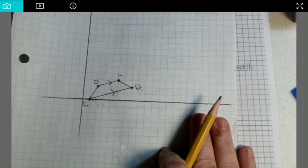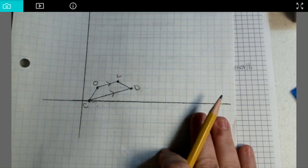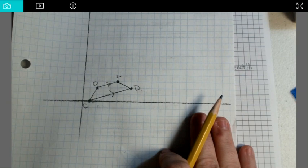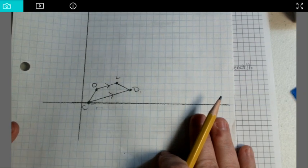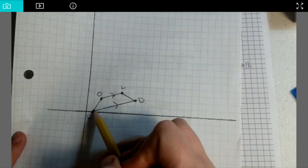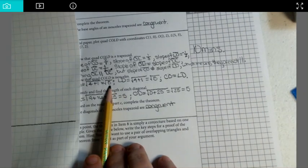Now, it asked for us to prove that they were isosceles as well. In order for it to be isosceles, the opposite sides that are not parallel, our non-parallel sides, have to be congruent because those are considered our legs. So I said, well, the distance from C to O was the square root of 5.